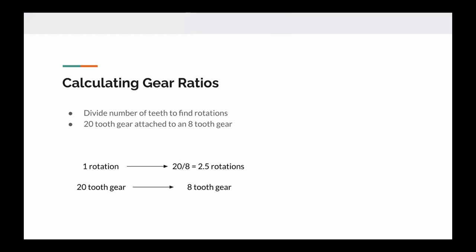To summarize, an 8-tooth gear is going to move 2.5 rotations for every rotation of the 20-tooth gear. And this calculation can be repeated for any combination of gears with teeth.